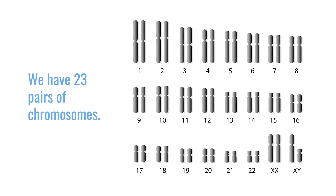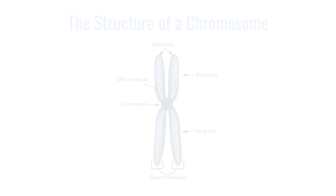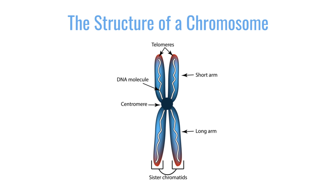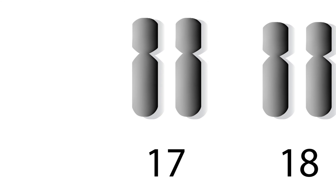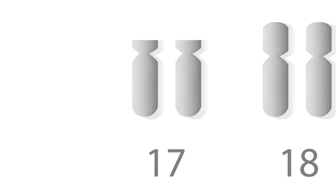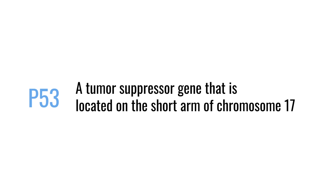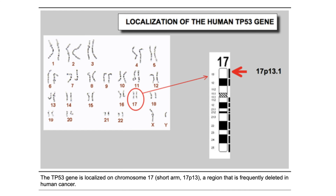One of the big ones we typically think about is something called a 17p deletion. We all have 23 pairs of chromosomes, and each chromosome has a long arm and a short arm — the short arm is P and the long arm is Q. So when we say a 17p deletion, we mean some of the information on the short arm of the 17th chromosome is not there. That's where something called P53 lives — a big tumor suppressor gene, one of the mechanisms of our body to prevent cancer. If you're missing that part of that chromosome, your myeloma tends to behave in a more high risk nature.